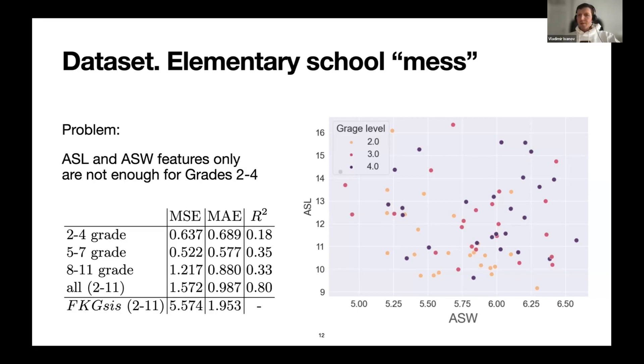But there is still trouble with this separation of different types of books, different grades, that you can see on the scatter plot. Different books, different grade levels are presented with different colors. On this two-parameter space it's hard to distinguish between different grade levels. So it's a problem for practical application of the formula.